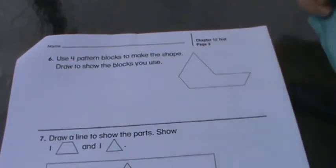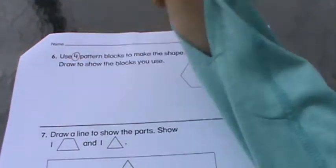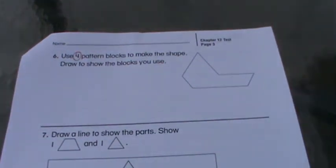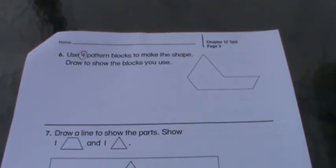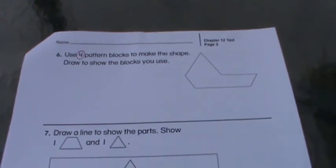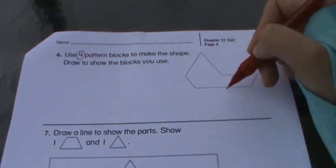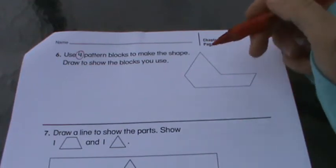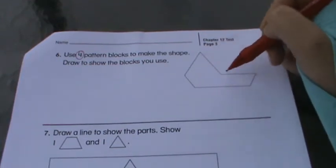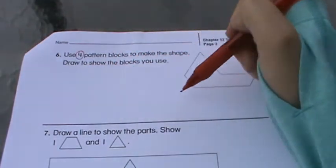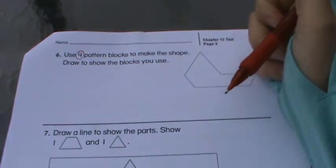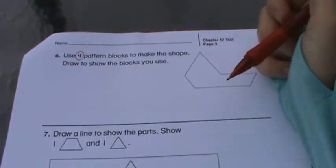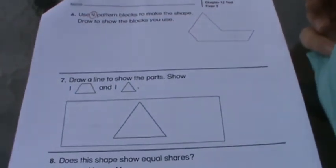Number six, use four pattern blocks. You have to use exactly four—not three, not two, not five. Four pattern blocks to make this shape. Draw to show the blocks you used. So you can draw lines on this picture or you can just draw the shapes out here if you would like, or both. Four pattern blocks.